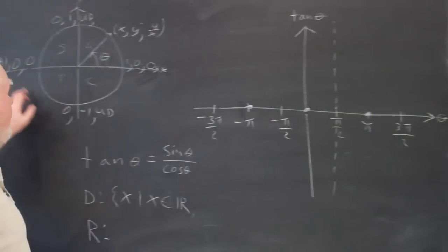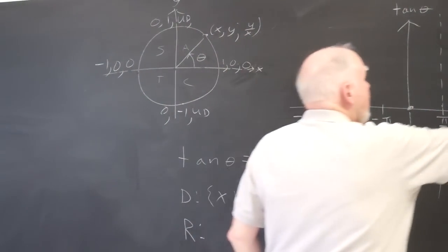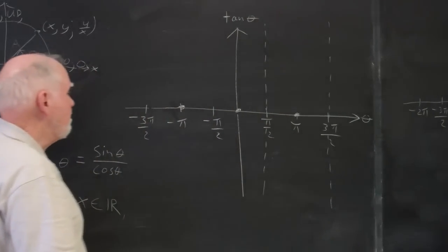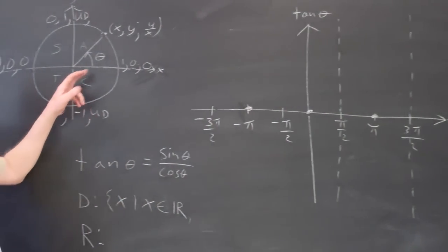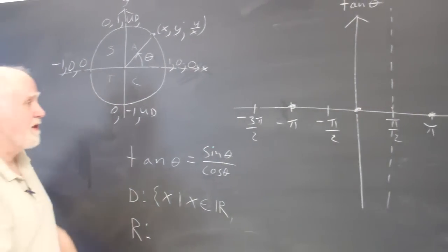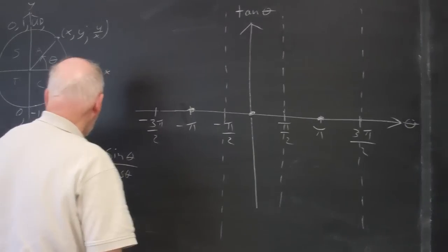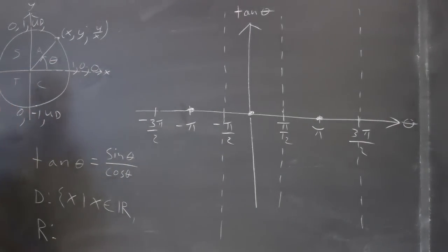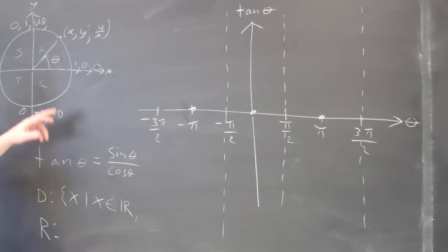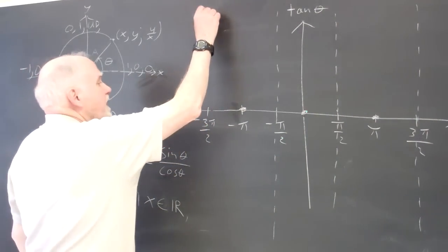At three pi over two, the cosine is zero, so we're going to have a vertical asymptote there. At negative pi over two, the cosine is zero, causing an undefined value for the tangent. And at negative three pi over two, the cosine is zero and the tangent is undefined.